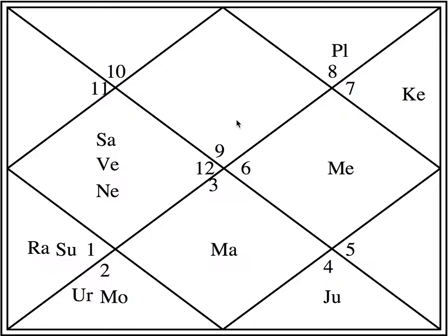Similarly, go to the tenth house — just check the number. Number 6 is there, which is Virgo, ruled by Mercury. So Mercury is ruling the tenth house. Don't think about Mercury sitting there — anyone can be sitting there or nobody. We will come to placement of planets later; now I am only talking of the house lords. Seventh house has sign number 3, which is Gemini, ruled by Mercury. So Mercury is the ruler of both the seventh house and the tenth house.